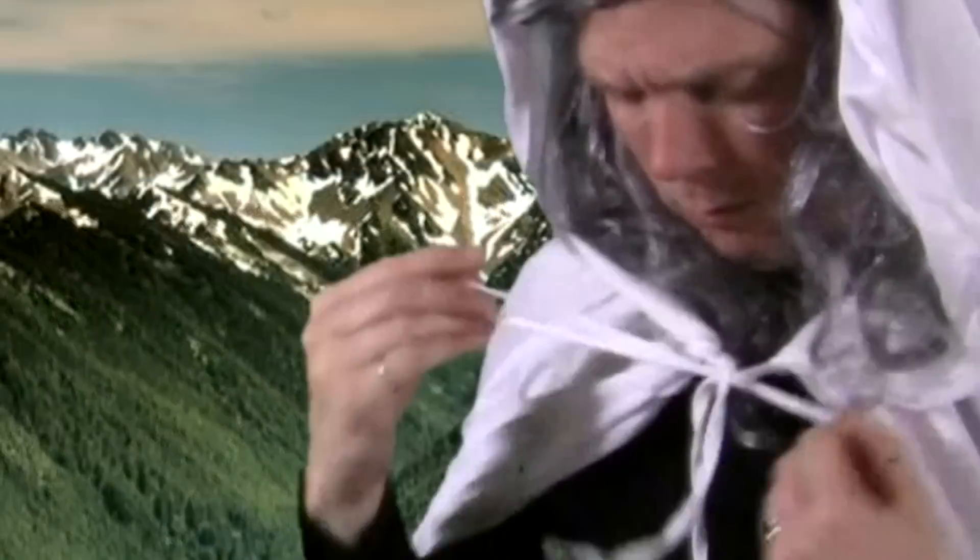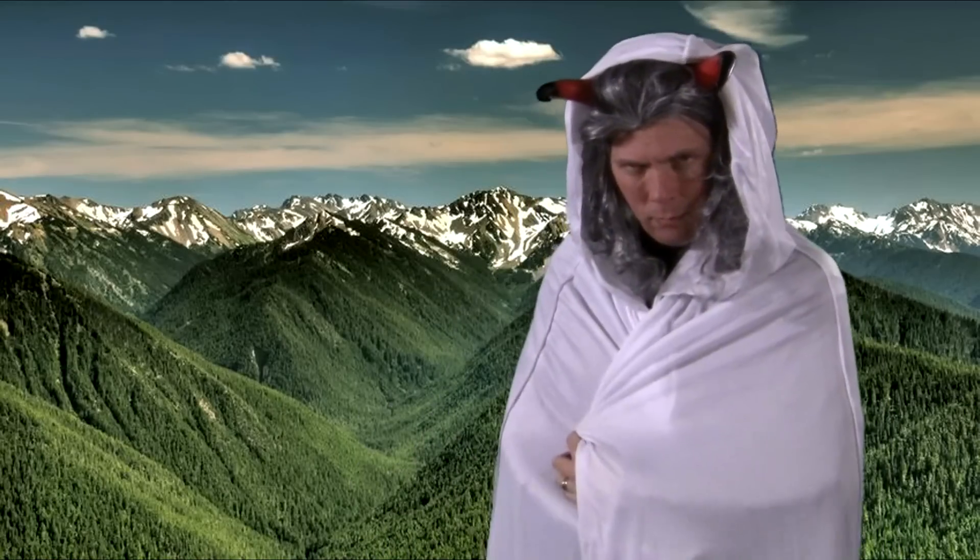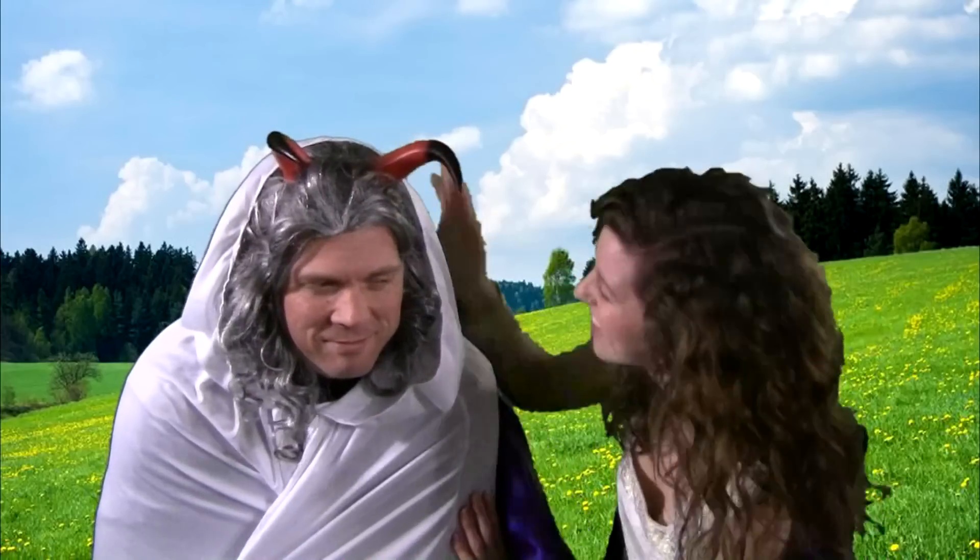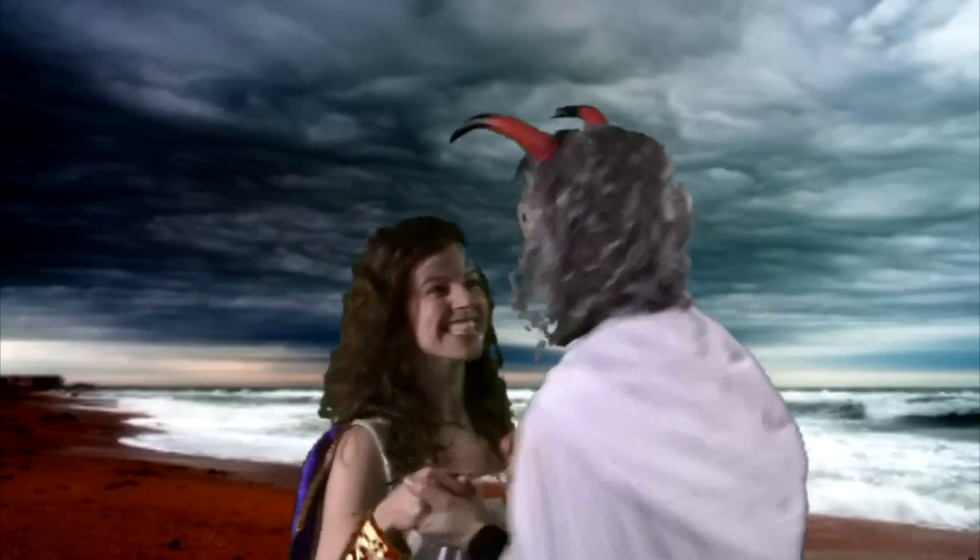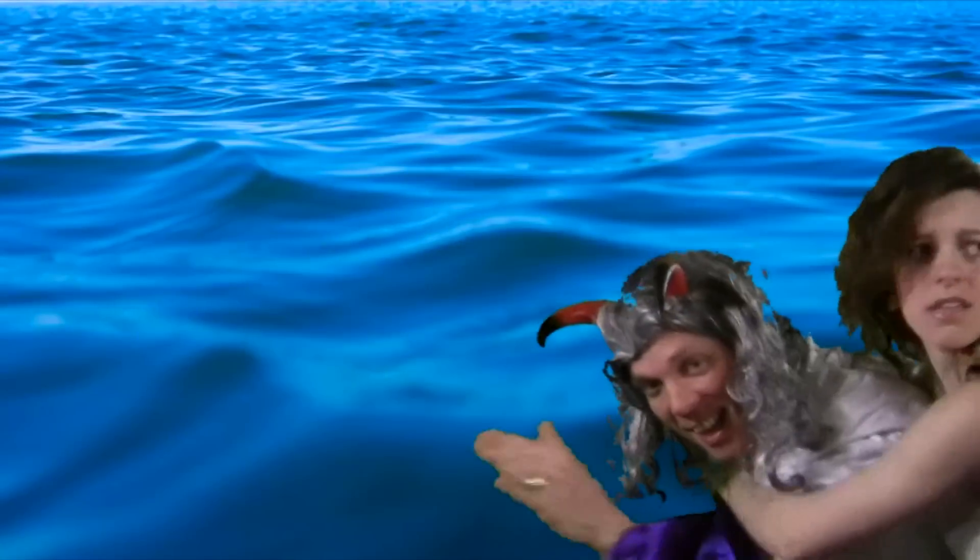Zeus became enamored of Europa, princess of Phoenicia, so he took on the form of a white bull. Europa was seduced by the beauty and gentleness of the bull, and the two played together on the beach. In so doing, Zeus convinced her to get on his back, and he swam across the sea to Crete,